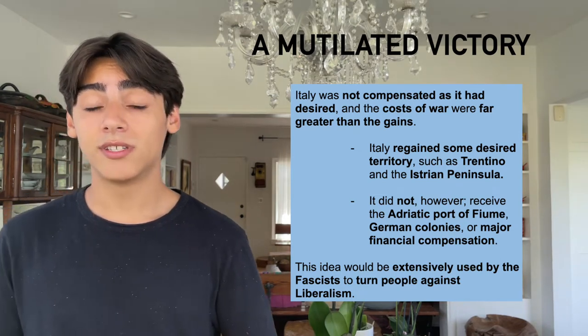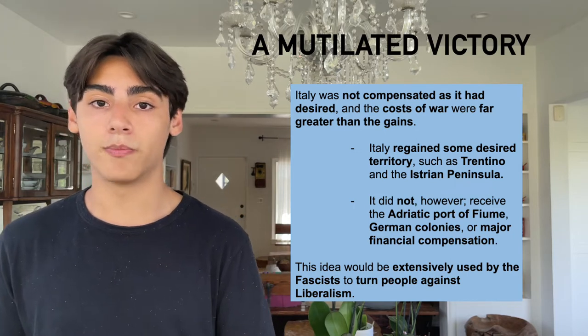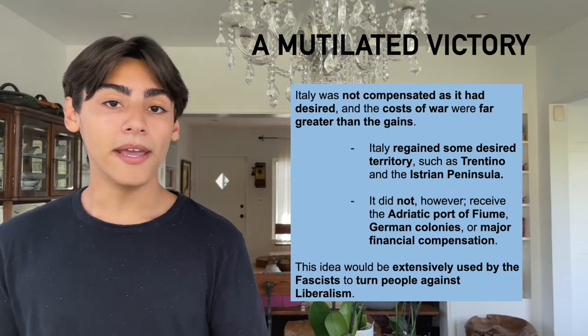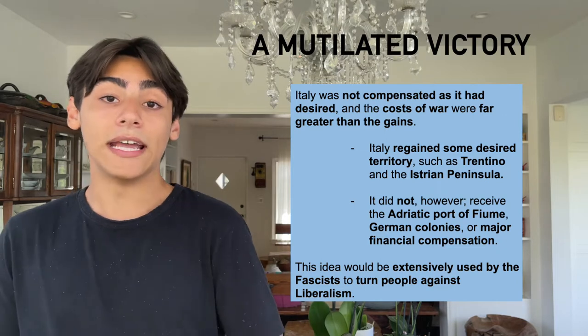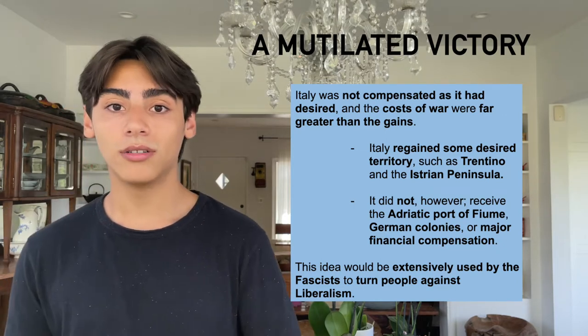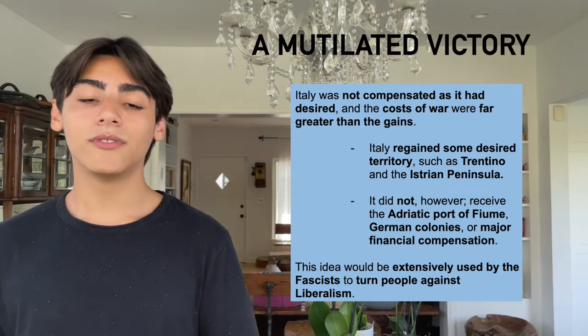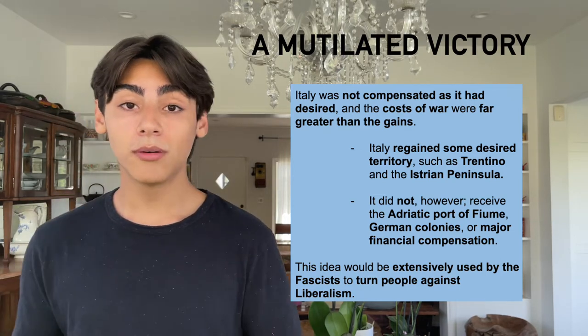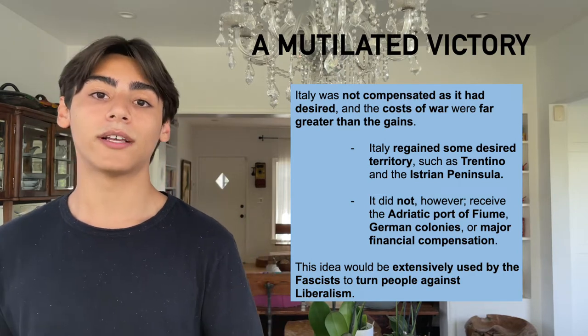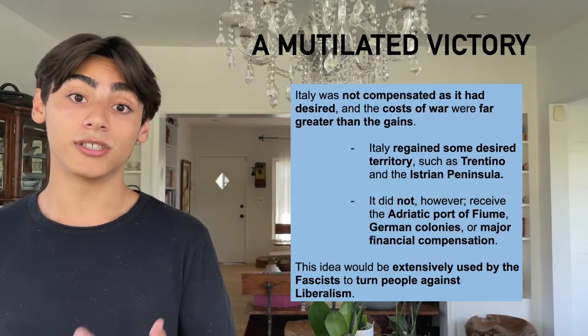It is true that Italy had received some sizable gains like Trentino and the Istrian Peninsula, but the major pieces of compensation it had hoped to achieve — like the Adriatic port of Fiume, German colonies, and significant financial compensation — were nowhere to be seen. The lack of these compensations would lead to great problems during the 1920s alongside the rise of fascism. For example, the Adriatic port of Fiume was a major piece of land Italy had hoped to gain, but when this did not occur following the Treaty of Versailles in 1919, the infamous Fiume question came about in September of the same year.